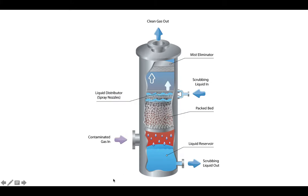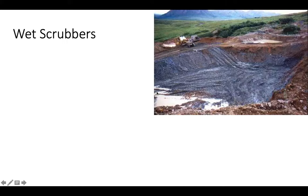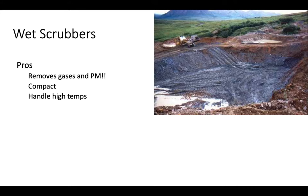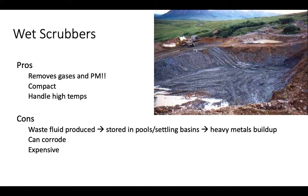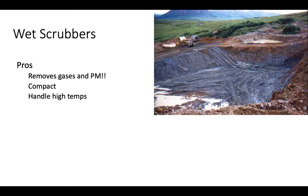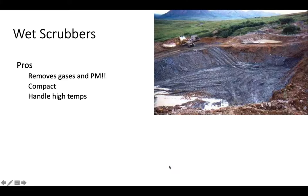Looking at another diagram: contaminated gas comes in, flows through a bed and through liquid and mist, SO2 gets captured and removed, and the cleaner gas exits. Wet scrubbers remove gases like sulfur dioxide and particulate matter, they're compact, and they can handle high temperatures. However, they produce that highly concentrated sulfur waste fluid that needs to be stored — often in a settling basin, which can lead to buildup of heavy metals. They also corrode over time and are quite expensive.